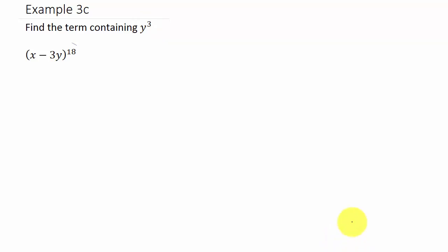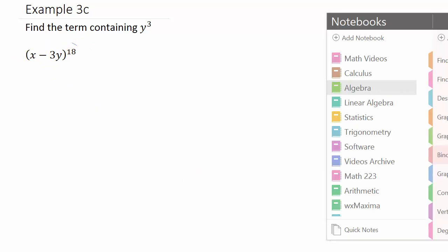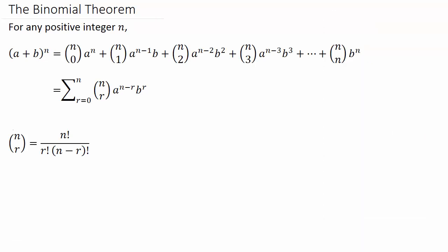Alright, so to do that, let's go and look at the binomial theorem, and I'll show you how you can get all that from just looking at the theorem. So what we have is x minus 3y to the 18th, and they want us to find the term containing y cubed. So you notice, here's our binomial raised to a power. A is x, b, since it's plus b, we have minus 3y, so our b would be negative 3y, and then n is 18.